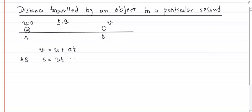The distance traveled by the object from A to B is given by s equals ut plus half at squared, so you can find the total distance. But what I want to know is the distance covered in a particular second — for example, at t equals 5 seconds.